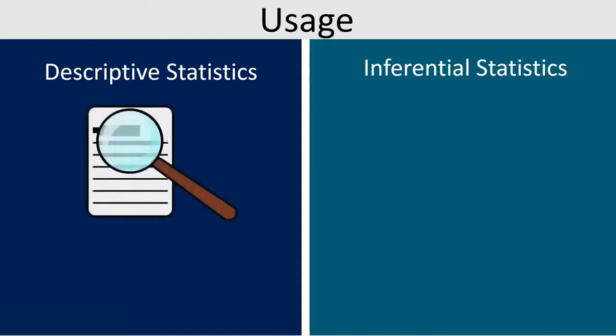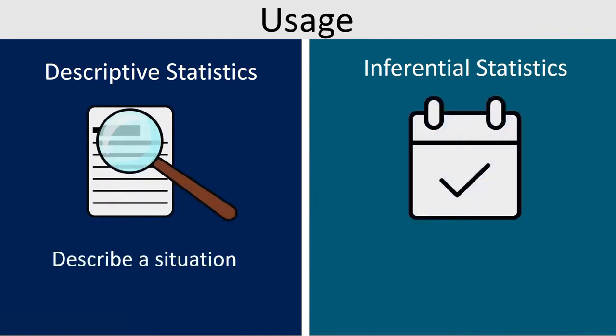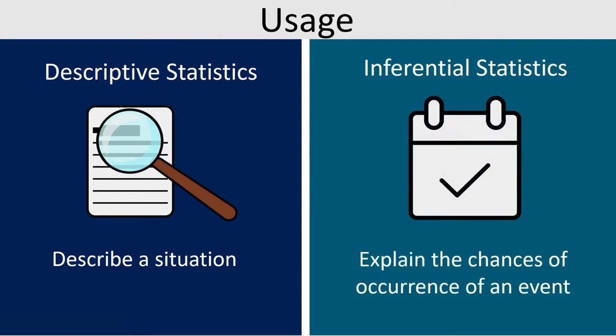Use: Descriptive statistics describe a situation. While, inferential statistics explains the chances of occurrence of an event.